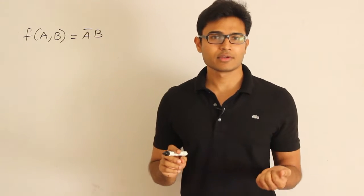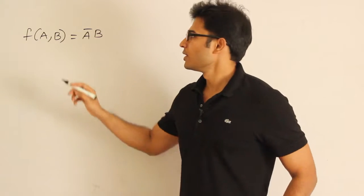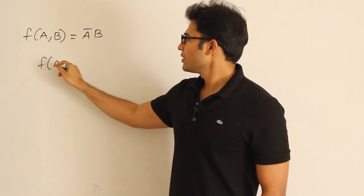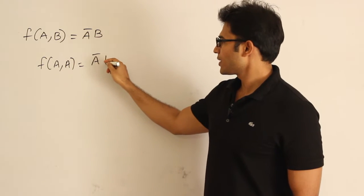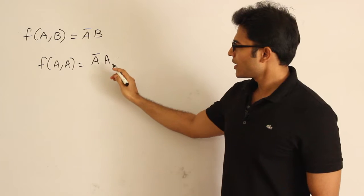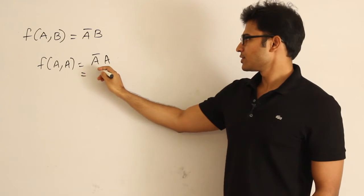The only way to get rid of one of the variables is putting everything to be same. So if I put f(a,a) then I could get rid of b. But then what is happening is a'a. In place of b I put a, then I am getting this which is nothing but 0.